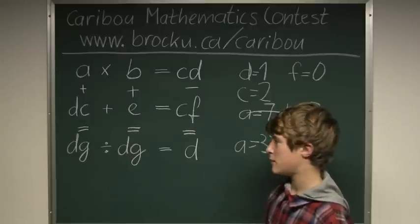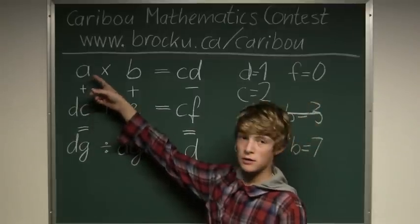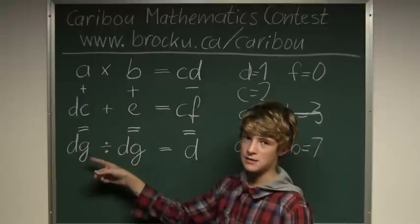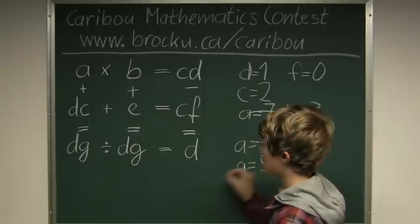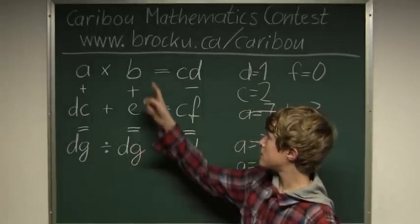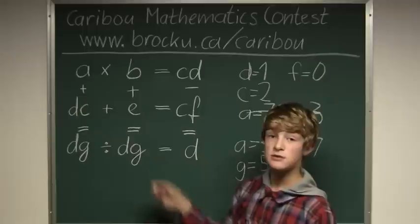Now that makes it very easy. That would be 3 plus 12 is 15, so G is 5, and 15 minus 7 is 8. So E equals 8.